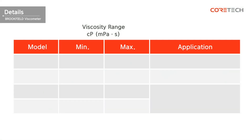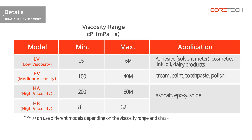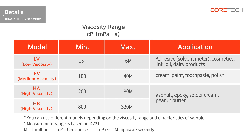The Brookfield viscometer is divided into LV, RV, HA, and HB models, depending on the measurement range and sample characteristics. Referring to the following table, you can select the model that fits the sample.